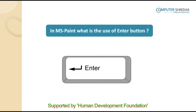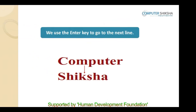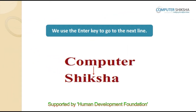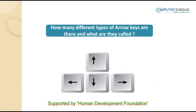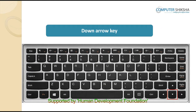In MS Paint, what is the use of the Enter button? We use the Enter button to go to the next line or to a new line. How many different types of arrow keys are there and what are they called? There are four types of arrow keys and these are used to move the cursor. They are called the Up, Down, Left and Right arrow keys.